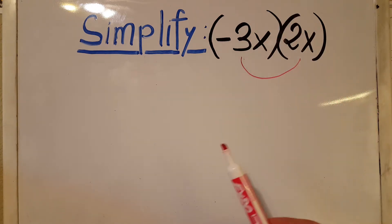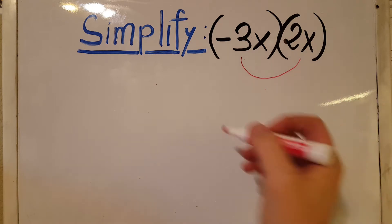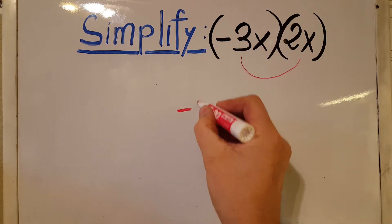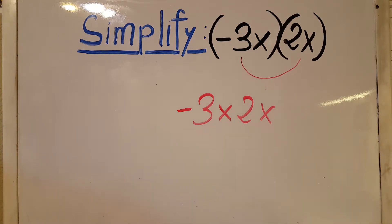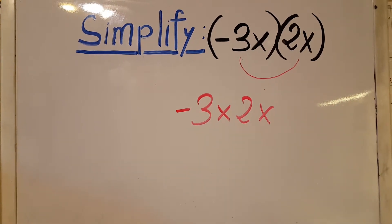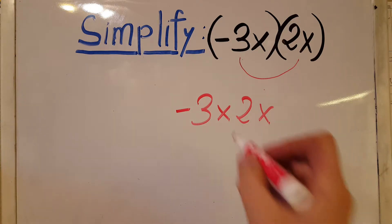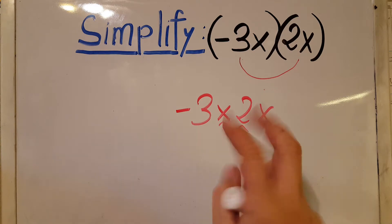So we can rewrite this whole thing as negative 3 times x times 2 times x. Now we're gonna use the commutative property and we're gonna switch this guy and this guy. We're gonna flip their places.